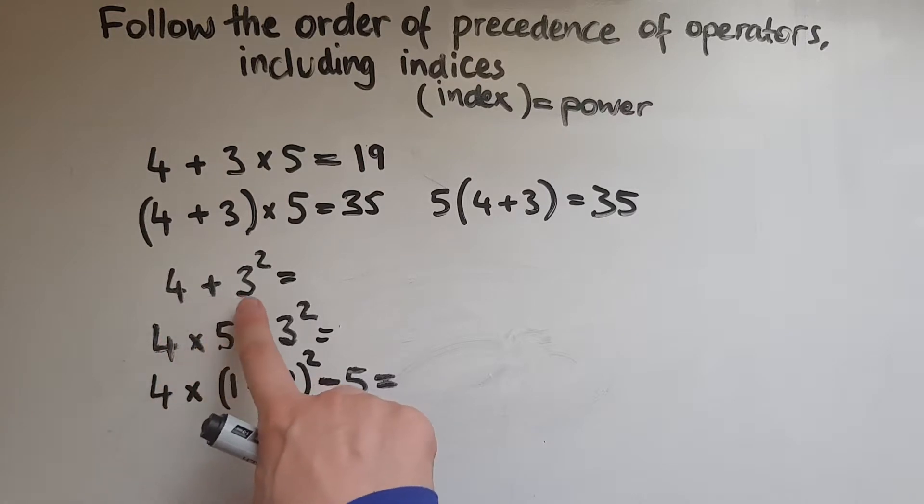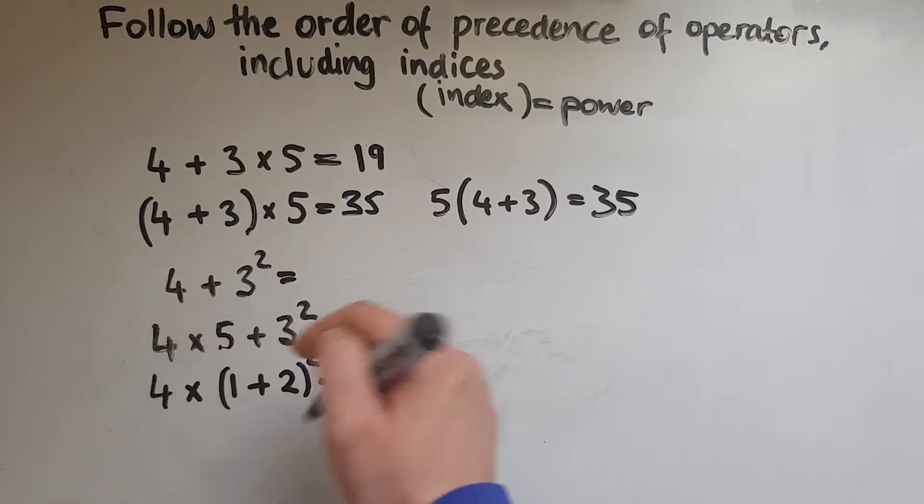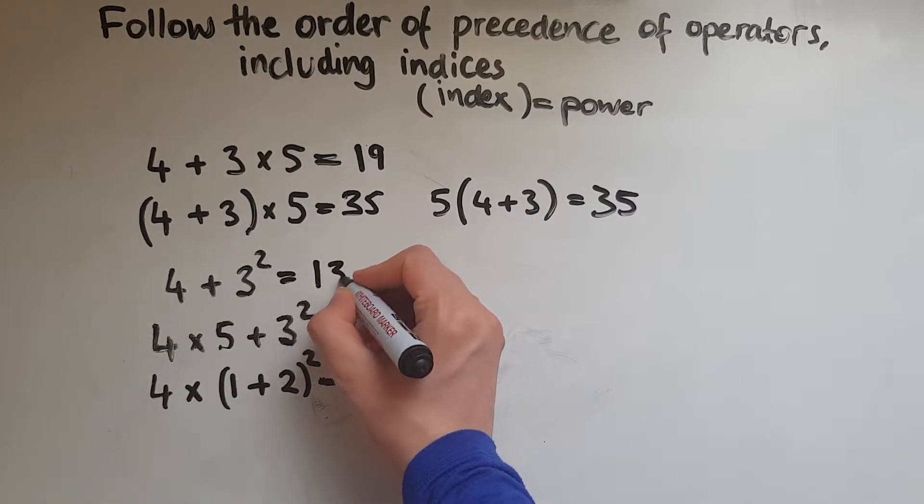4 add 3 squared. So we're going to add 4 to the 3 squared. So what is 3 squared? That is 9. Add 4 to it gives us 13.